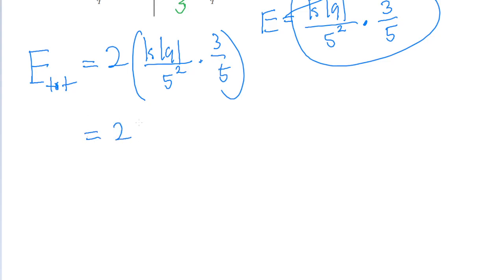So that's 2 times the Coulomb constant, which has a value of 8.99 times 10 to the power of 9, multiplied by the charge on one of the particles, which is given both charges have a magnitude of 3.2 times 10 to the power of negative 19 coulombs,